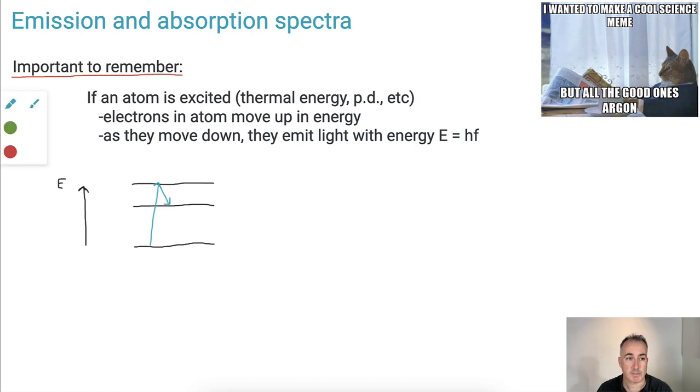And what's special about us, every time that happens, so whenever it drops down, there's a photon, in other words, a little piece of light that has energy E equals HF, where F is the frequency.